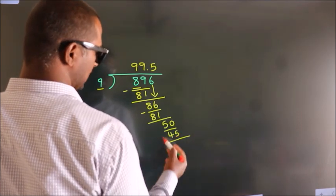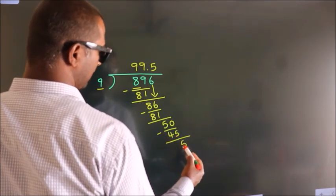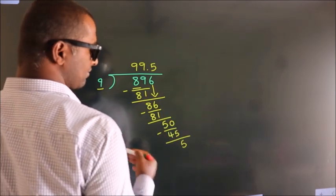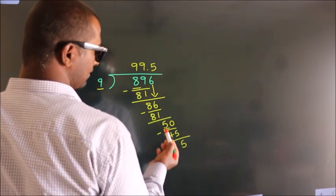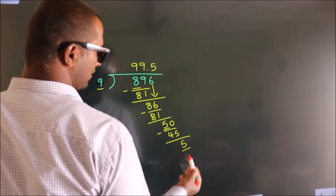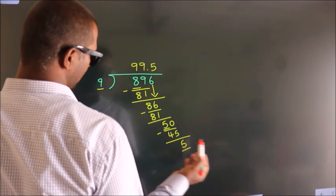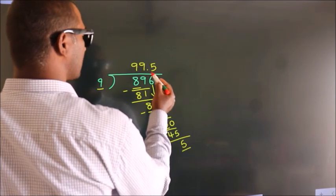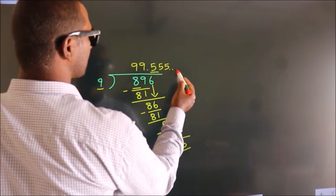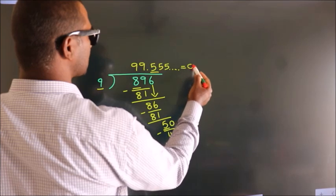Now we subtract. We get 5. Now you observe, we had 5 here and we got 5 again. That means this number keeps on repeating. So this is our quotient.